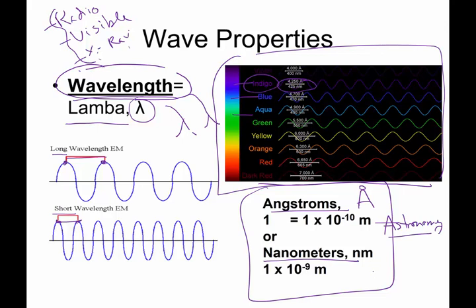But physicists and chemists tend to like nanometers. So you are going to see both. An angstrom is 1 times 10 to the negative 10th meters, and a nanometer is 1 times 10 to the negative 9th meters. That's why these numbers up here in this chart are off by one digit, 6,300 and 630. It's the units that are used.